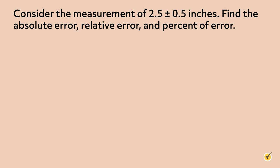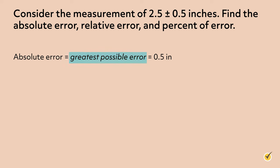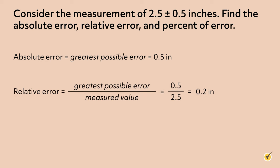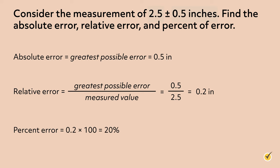Let's take a look at another example. Consider the measurement 2.5 ± 0.5 inches. Unlike our last example, there is no known value given. The absolute error is equal to the greatest possible error, which is 0.5 inches. To find the relative error with no known value given, divide the greatest possible error by the measured value: 0.5 ÷ 2.5 = 0.2. To find the percent of error, multiply the relative error by 100, giving us 20 percent. Therefore, the 0.5 inch difference in measurement is a 20 percent error.